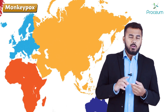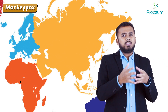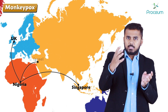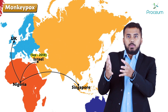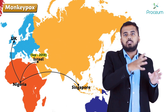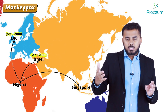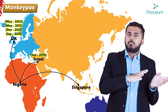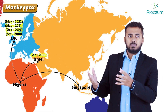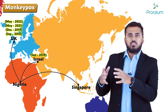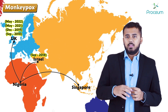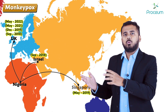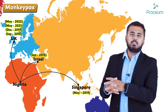Travelers from Nigeria have spread the disease globally. The first case in Israel was reported in September 2018 due to a Nigerian traveler. Travelers from Nigeria to the UK also triggered cases in September 2018, December 2019, May 2021, and May 2022. In May 2019, travelers from Nigeria to Singapore also resulted in contracted cases there.